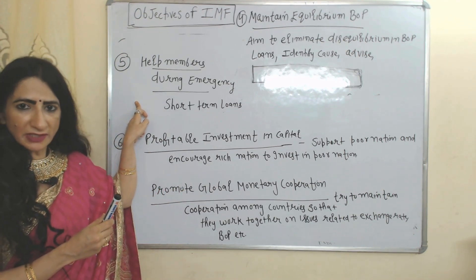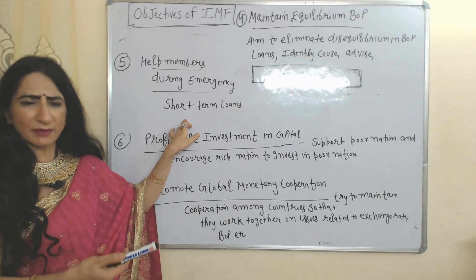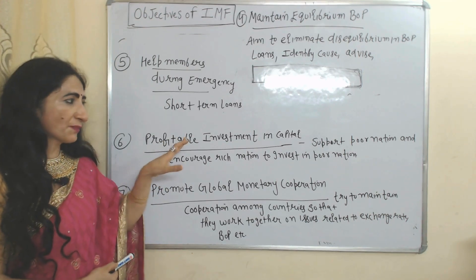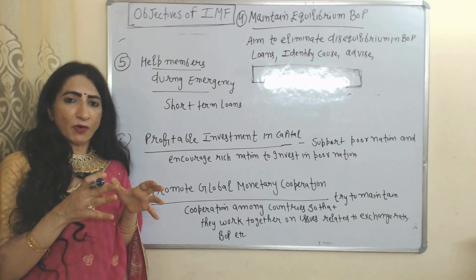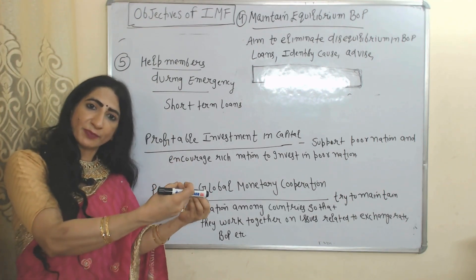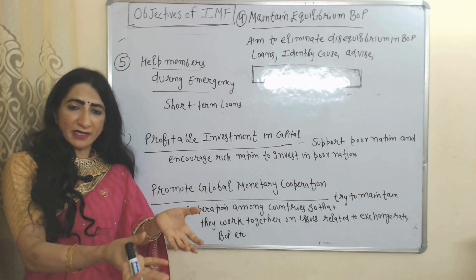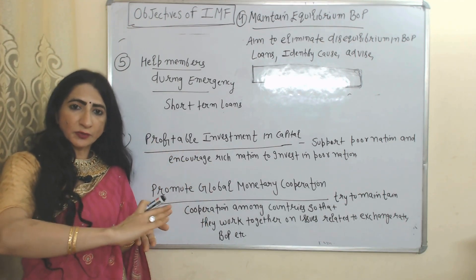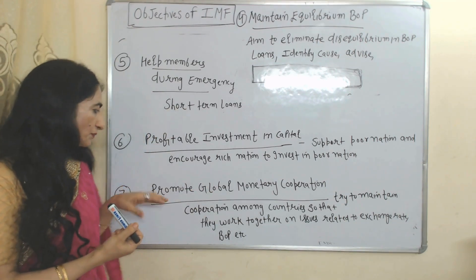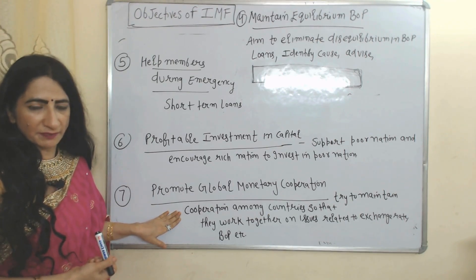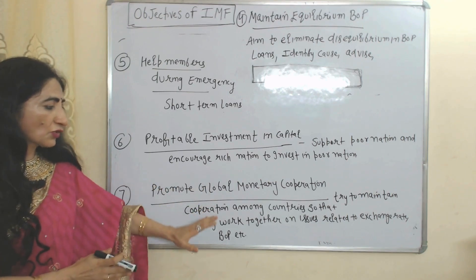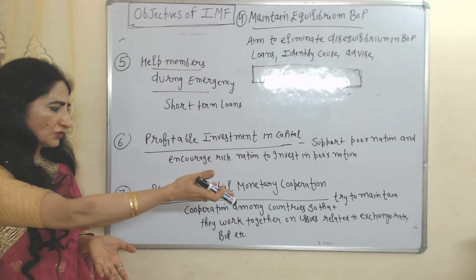Next: help member countries during emergency by giving short-term or medium-term loans. Also, profitable investment in capital — IMF supports poor nations and encourages richer nations to invest in poor nations, so that investment, output, income, and employment increase and poor nations grow. Next: promote global monetary cooperation — IMF tries to maintain cooperation among member countries on issues related to exchange rate, balance of payment, or any trade-related issue.